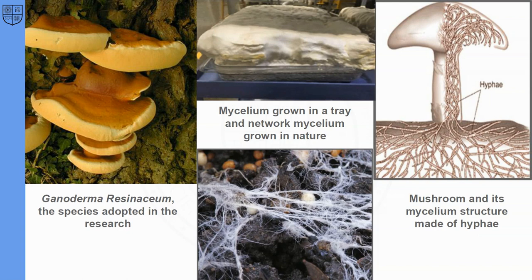Mycelium is the name given to the root system of mushrooms. When we think of a mushroom, we typically picture an organism with a little hat on top, but rarely do we see what the mushroom looks like at its base. The fungi studied in this research is Ganoderma resinacium, a wood-decaying fungi without a stem. When lab-grown using a mix of agricultural waste, nutrients, and a liquid Ganoderma mycelium starter, the mycelium grows in a tray mold and looks like a pillow.